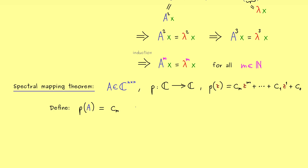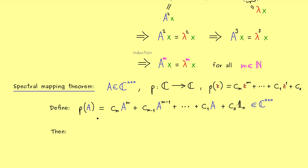Instead of the variable z, we now have the matrix A, using the same powers and same coefficients. It is important that all these operations are well-defined matrix operations. The only adjustment is the constant term — we can't add a complex number to a square matrix, so we need the identity matrix: c_0 times the n×n identity matrix. What we get out is again a square n×n matrix, and the whole thing is well-defined — rewriting the polynomial gives the same matrix.